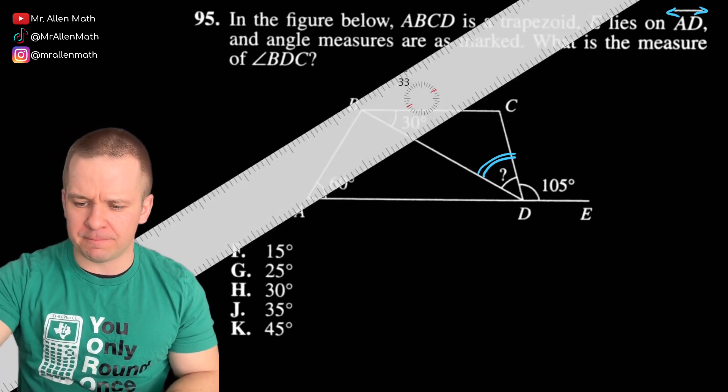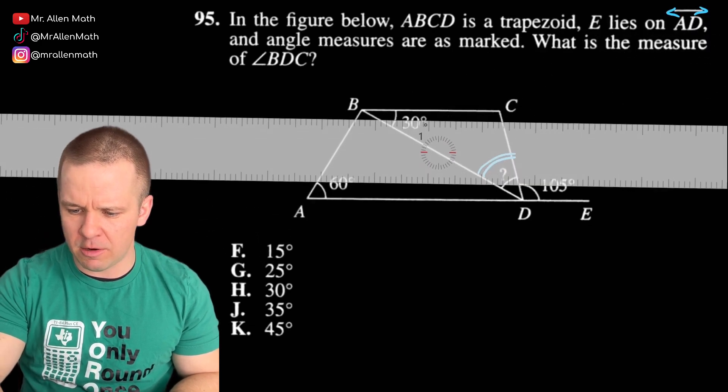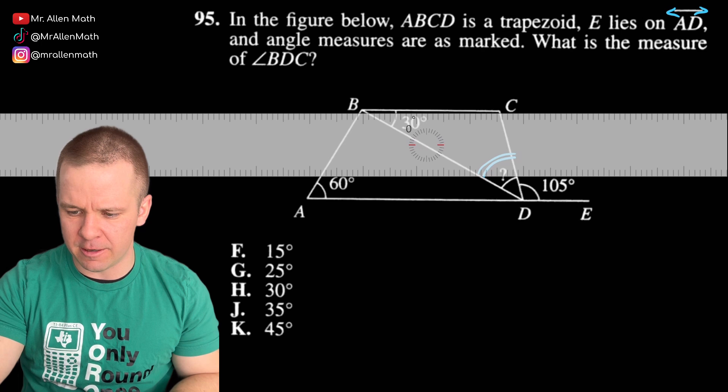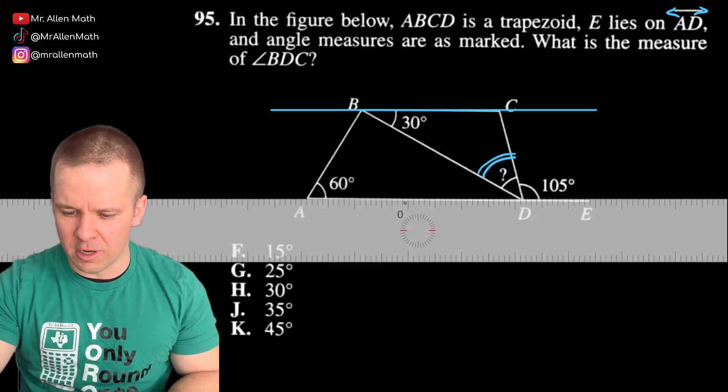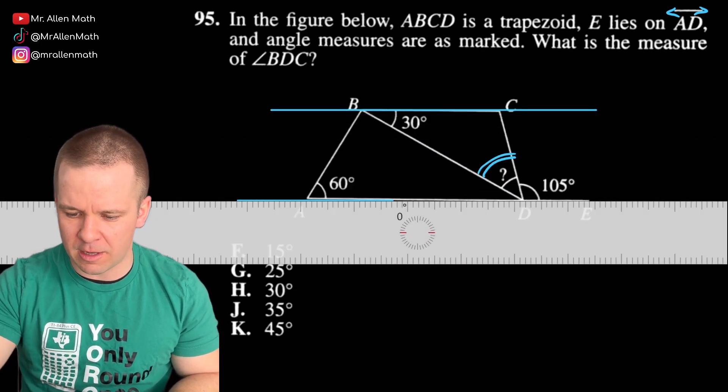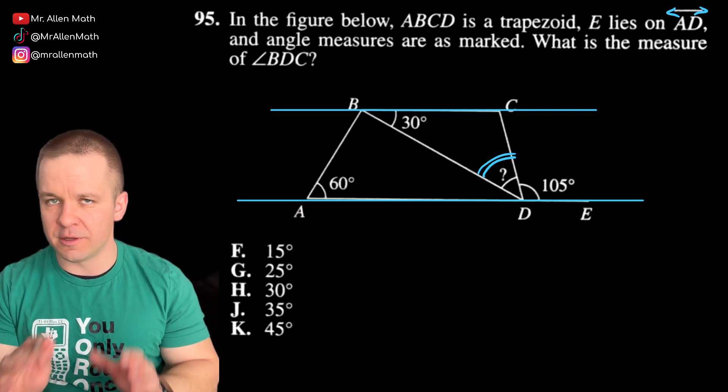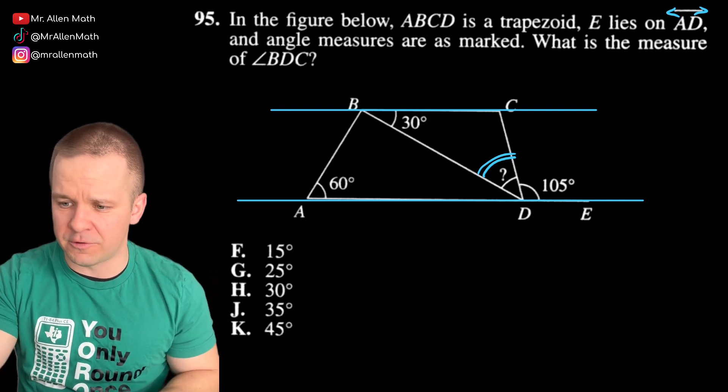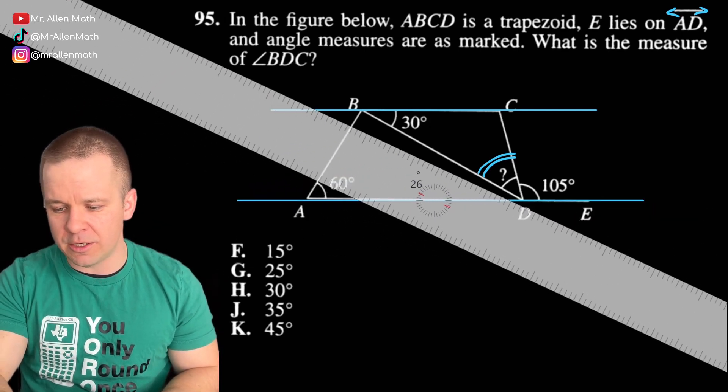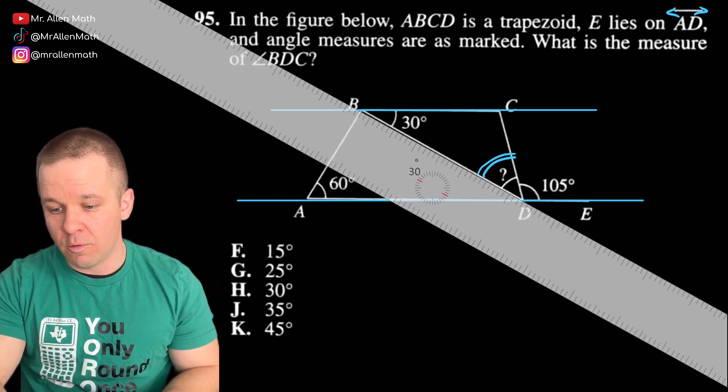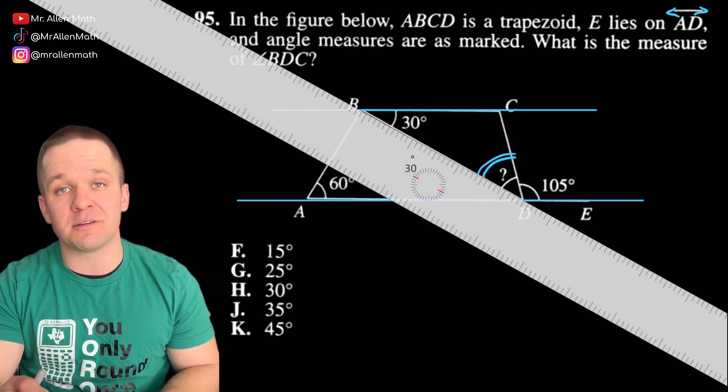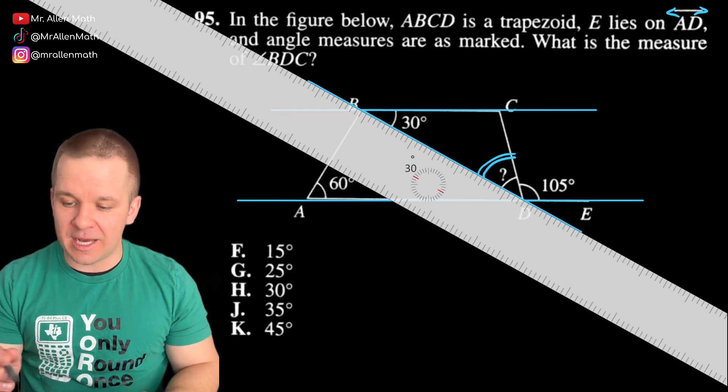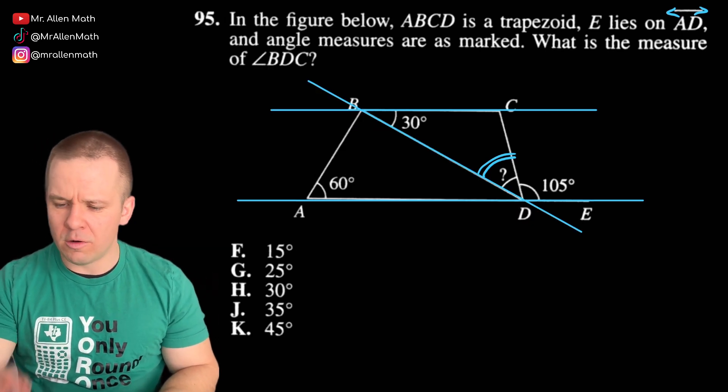Got to make sure you actually circle it, bubble it. Don't just circle it in your work there. We got 130 degrees worked all the way through those triangles there. So know your isosceles triangles, your congruent angles from that, super duper helpful. All right. One more in the figure below ABCD is a trapezoid, just regular old trapezoid, which means I have one pair of parallel bases. It looks like it's BC and AD. E lies on AD. It's a typo by ACT. There should be little arrows on the AD here because otherwise it's just a segment. Angle measures are as marked. What is the measure of angle BDC?